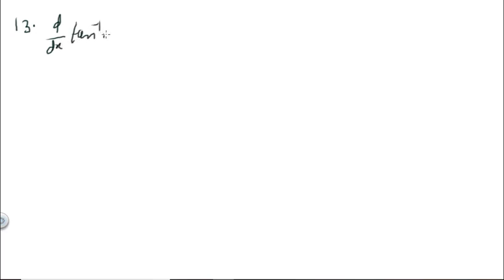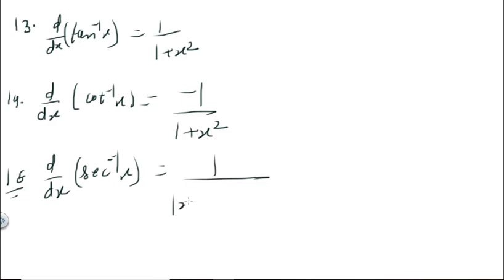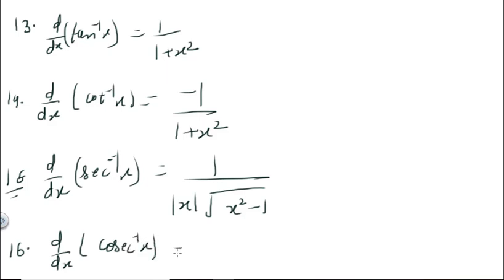Formula 13: d/dx of tan⁻¹x = 1/(1 + x²). Formula 14: d/dx of cot⁻¹x = −1/(1 + x²). Formula 15: d/dx of sec⁻¹x = 1/(|x|·√(x² − 1)). Formula 16: d/dx of cosec⁻¹x = −1/(|x|·√(x² − 1)). Note the modulus sign in the last two formulas.